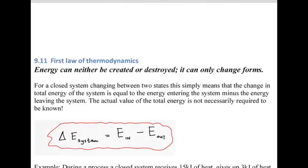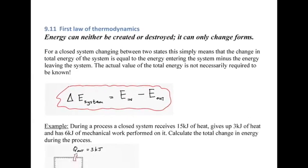The first law of thermodynamics states that energy can neither be created nor destroyed — it can only change forms. Hence for a closed system changing between two states, the change in total energy equals the energy entering the system minus the energy leaving the system. Conveniently, the actual value of total energy is not necessarily required — you're often just interested in the change in energy.